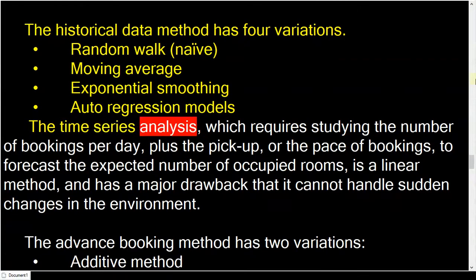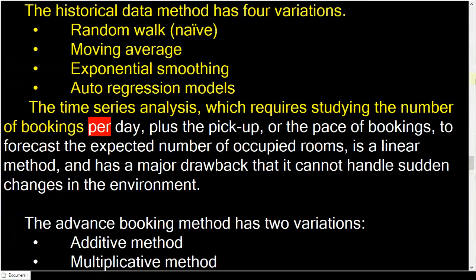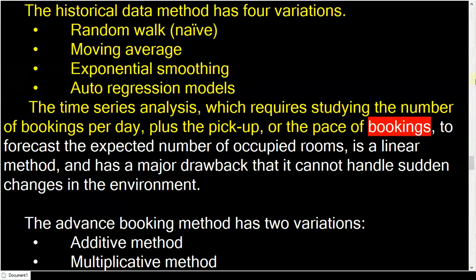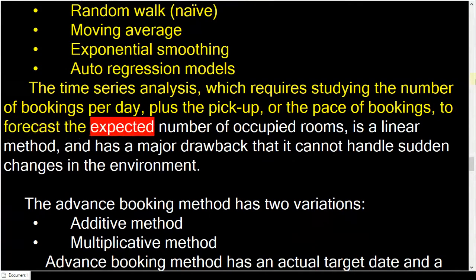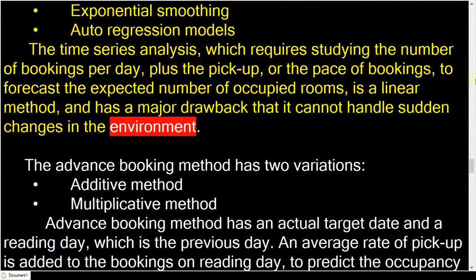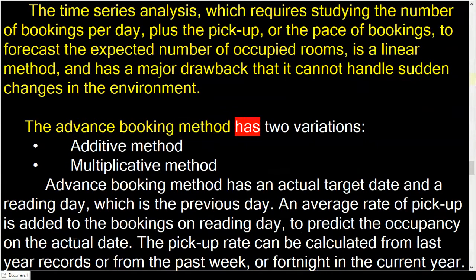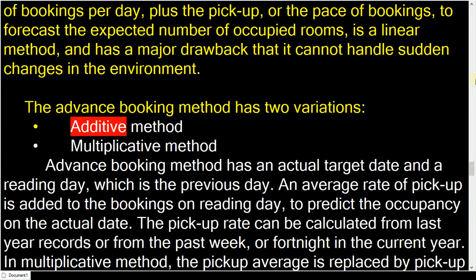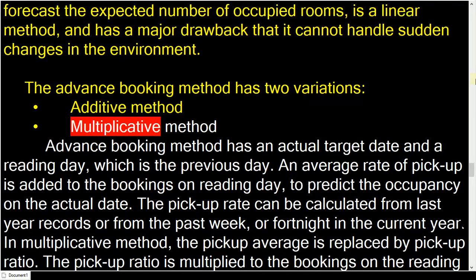The time series analysis, which requires studying the number of bookings per day plus the pickup or pace of bookings to forecast the expected number of occupied rooms, is a linear method and has a major drawback that it cannot handle sudden changes in the environment. The advanced booking method has two variations: the Additive Method and the Multiplicative Method.